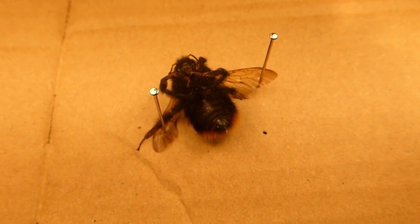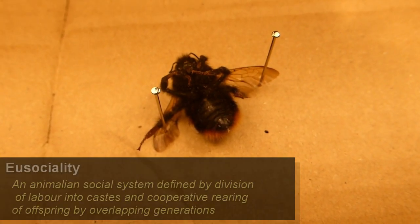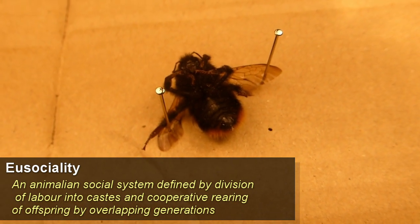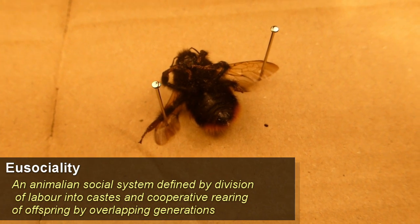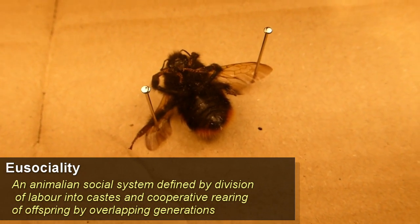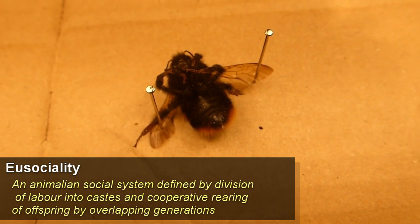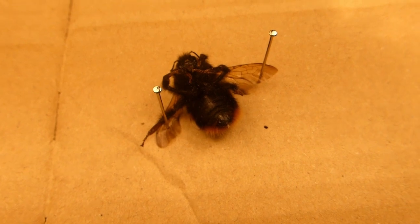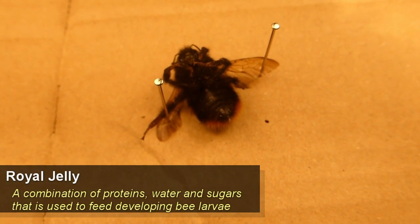Many bees, especially ones like this in the tribe Bombini, display eusociality. Eusociality is a caste system within insects where, for example, there will be a queen attended by maybe a couple of hundred drones and then thousands of worker bees like this one. The drones will defend and maintain the nest, the queen lays eggs, and the worker bees head out to collect pollen to turn into honey and royal jelly.